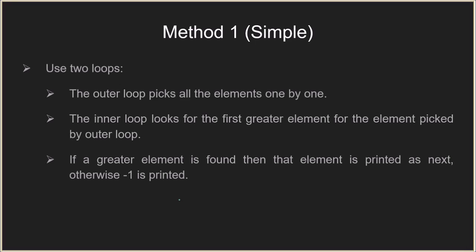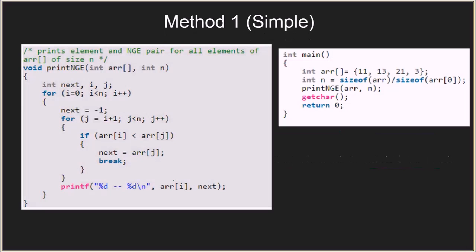Now let's look at the solution. We will be discussing two methods to solve this problem. The first one will be the simple solution and the second one will be using stacks. In the simple approach we use two loops — the outer loop picks all the elements one by one, the inner loop looks for the next greater element for the element picked by the outer loop. If a greater element is found it is printed, otherwise minus 1 is printed. This is basically a brute force algorithm.